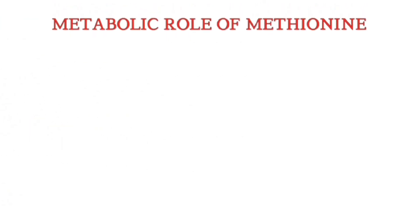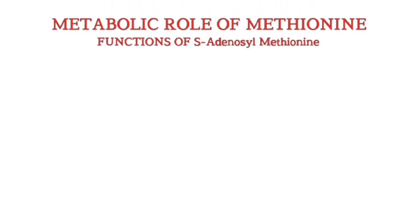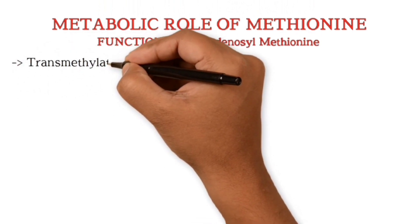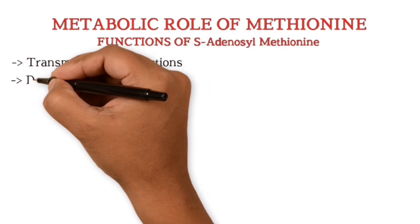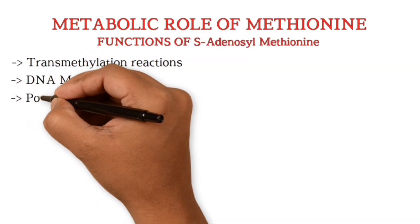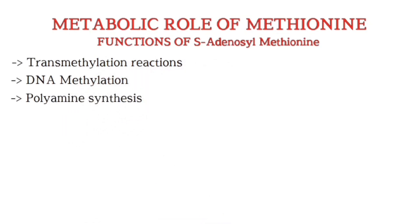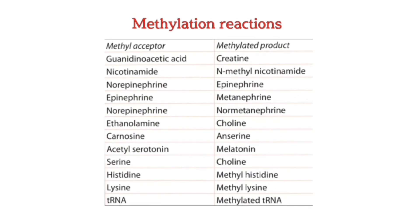Now we will see the metabolic role of methionine, or you can say functions of S-adenosylmethionine. It includes methylation reactions, DNA methylation, and polyamine synthesis. Important products from methylation reactions include creatine from guanidoacetate, epinephrine from norepinephrine, choline formation from ethanolamine, and formation of melatonin.